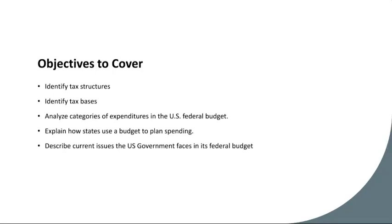Finally, examining the current state of the U.S. federal budget, several pressing issues come to light. Perhaps most prominently, the national debt has reached unprecedented levels, raising concerns about fiscal sustainability and future generations' economic well-being. Additionally, funding entitlement programs like Social Security, Medicaid, and Medicare pose significant challenges as the population ages and health care costs rise. Moreover, debates persist over the appropriate level of defense spending, infrastructure investment, and social safety net programs.